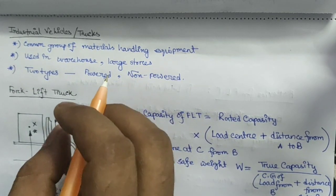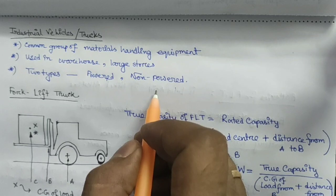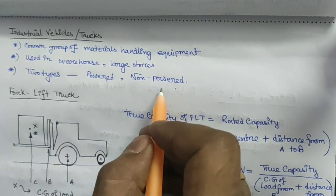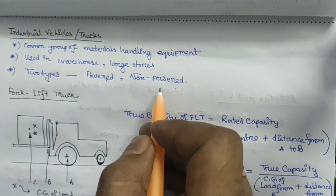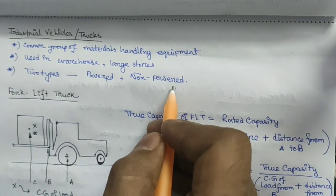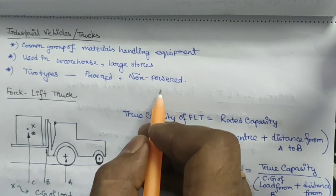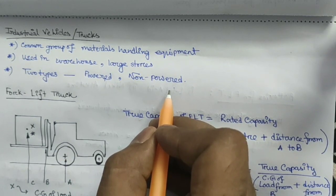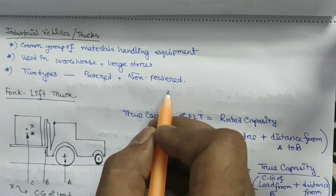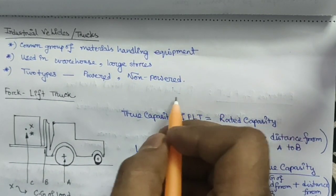A power truck has a source of power available for running it. The non-power truck is also known as a hand truck, meaning there is no motive power — it doesn't contain any kind of power to run. Only manual movement helps to move this type of truck, or it can be attached to another powered vehicle. This hand truck is classified into three subgroups: two-wheel hand truck, multiple-wheel hand truck, and hand lift truck.